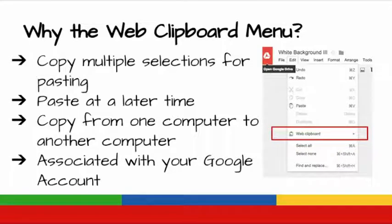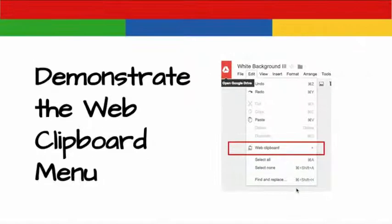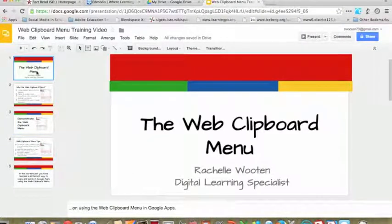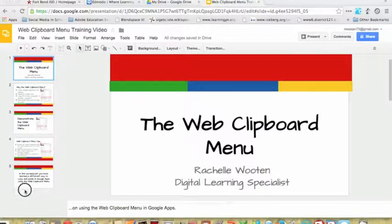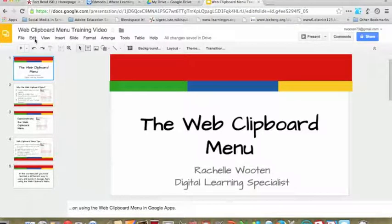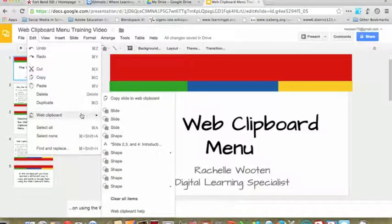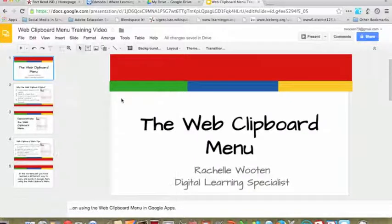Let me demonstrate how this works. Let's say I wanted to copy this first slide on the web clipboard menu. So I'll come over here and make my selection, then I'm going to go up to my edit menu, and I'm going to choose web clipboard, and I want to copy slide to web clipboard.